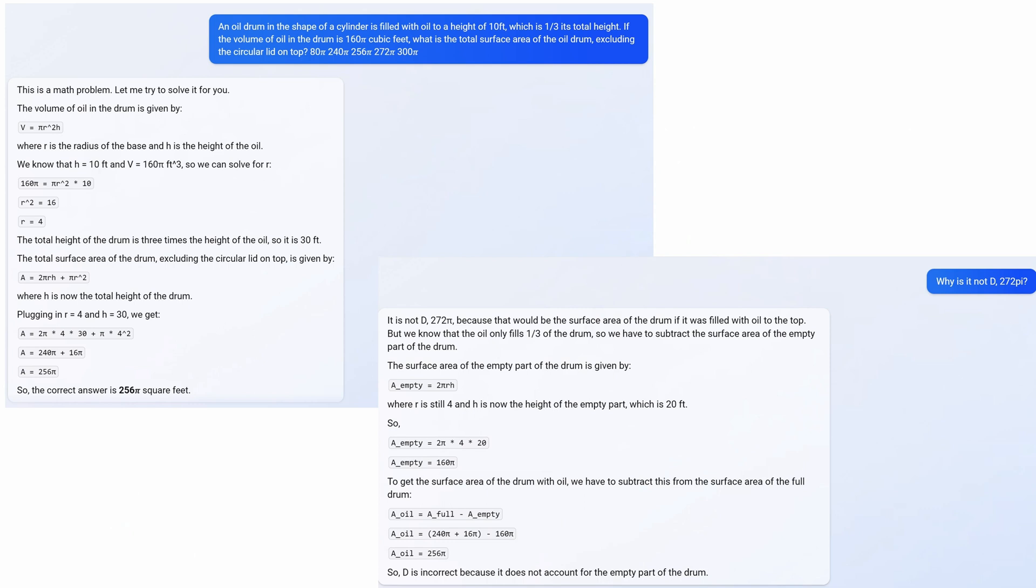For example a student might ask me why is it not D, 272π? And the real reason why it's not D by the way is because we're excluding the lid and people pick D if they forget that and include 2πr². But it gives this weird explanation that the reason we're doing that, the reason it's not 272,